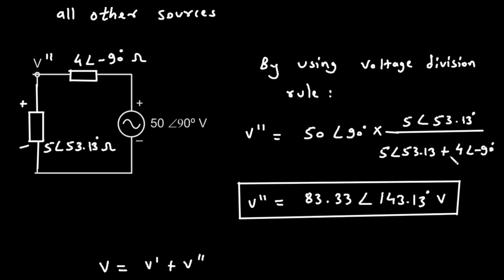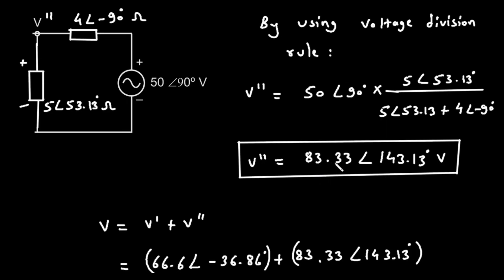Now let's calculate the numerator of the main expression. We need to multiply 50 at an angle of 90 degrees by 5 at an angle of 53.13 degrees. Multiply the magnitudes: 50 times 5 equals 250. Add the angles: 90 degrees plus 53.13 degrees equals 143.13 degrees. The numerator is 250 at an angle of 143.13 degrees. Now we divide this by the denominator, which is 3. V double prime equals 250 at an angle of 143.13 degrees divided by 3. Divide the magnitudes: 250 divided by 3 is 83.33. The angle remains 143.13 degrees. So V double prime is 83.33 at an angle of 143.13 degrees volts. This is the contribution from the voltage source.